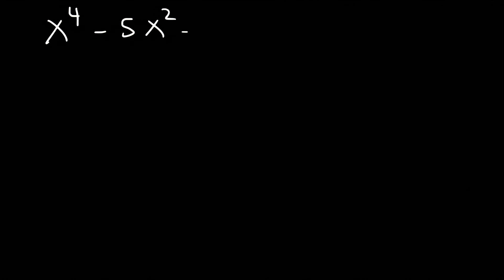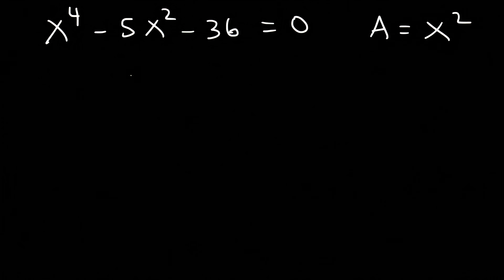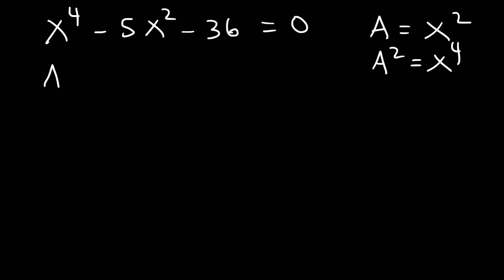Now let's move on to our next example. Let's say that x to the fourth minus 5x squared minus 36 is equal to zero. Notice that this equation is reducible to a quadratic form, so we can factor it using substitution. Let's say that a is equal to x squared, so that means that a squared is equal to x to the fourth. Let's replace x to the fourth with a squared and x squared with a.